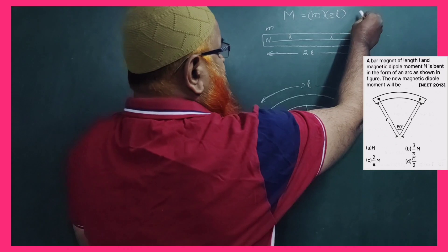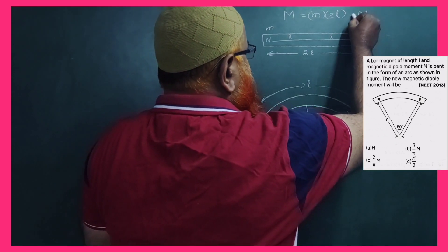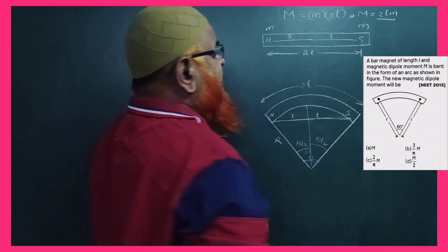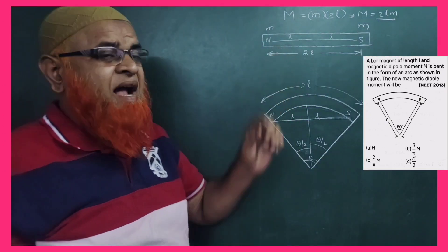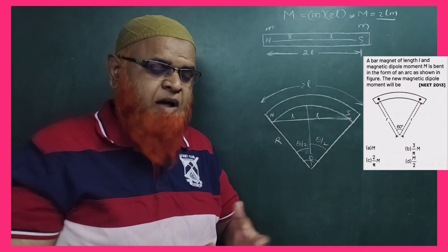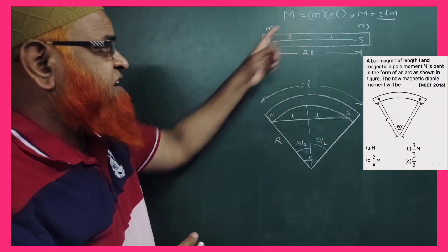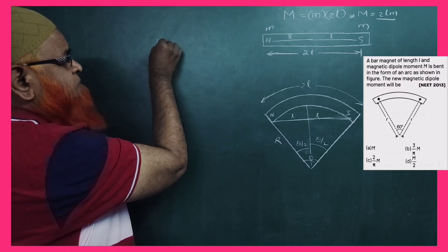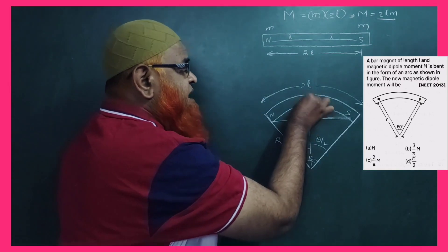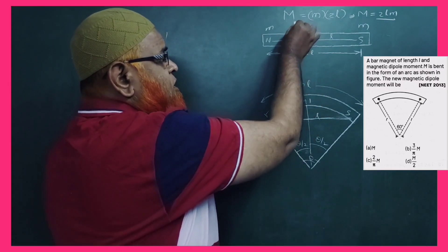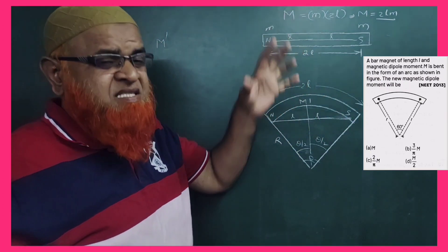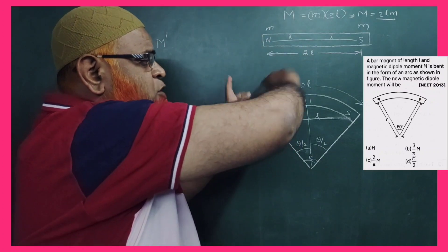The formula for magnetic moment is M = 2L·m, where m is the pole strength. Now, when this same magnet is bent in the form of an arc, the definition of magnetic moment remains the same, but the new magnetic moment is called M dash (M'). The old straight magnet's moment is M.